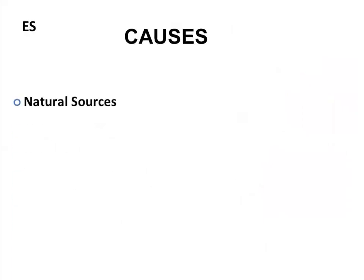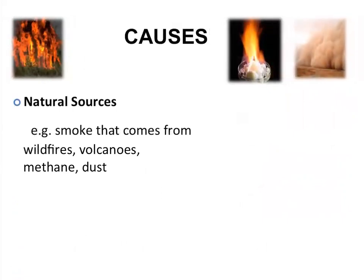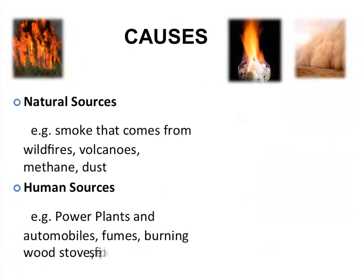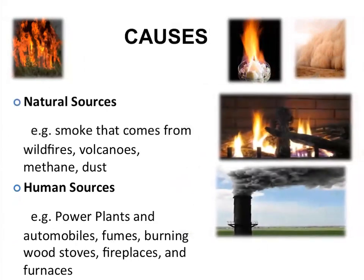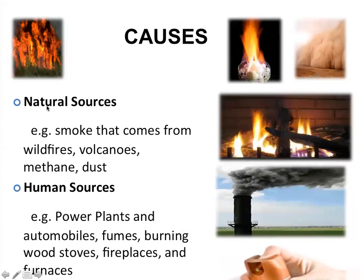There are many causes of air pollution. We can categorize them into natural sources and anthropogenic sources. Anthropogenic sources may include power plants, automobiles, fumes, burning of wood, fireplaces, and furnaces. Natural sources include smoke from wildfires, volcanic eruptions, production of methane gas, and various dust particles. Basically, these are the two main causes of air pollution.